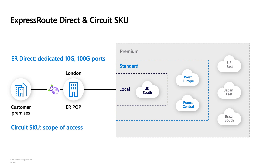Let's use an example. Say you are connected to us in London — you have three choices for your circuit. If you create a local circuit, you can connect from London to UK South, the region next to London. With a standard circuit, you can connect to all Azure regions in Europe. With a premium circuit, you can connect to any Azure region in the world — the US, Japan, Australia. Basically, the circuit SKU defines the scope of access, and you decide which to use based on your need and application design.